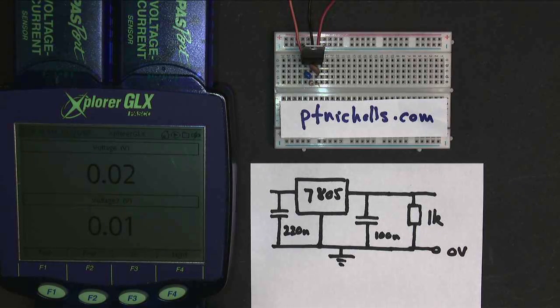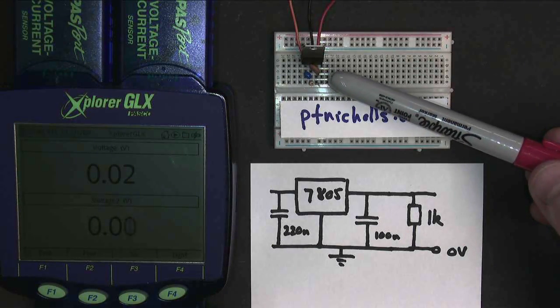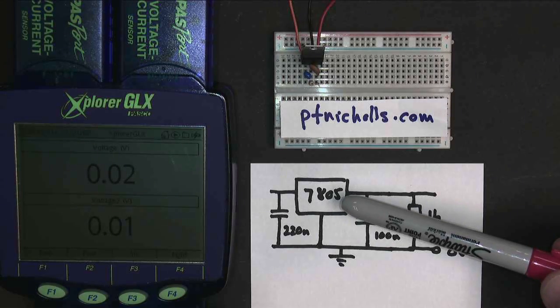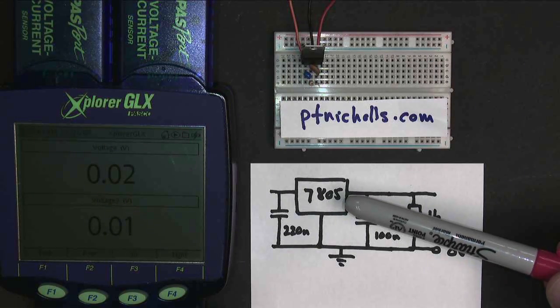This is a video about the smallest circuit I've built yet. This is a voltage regulator, a 7805, giving a 5 volt voltage regulator.